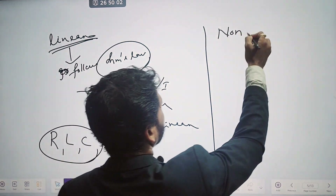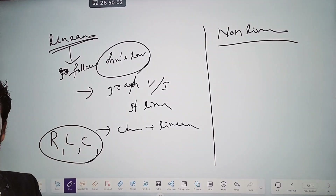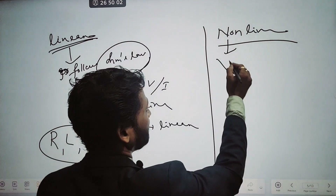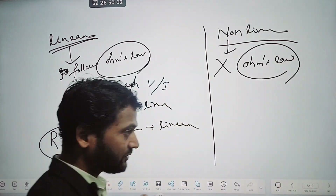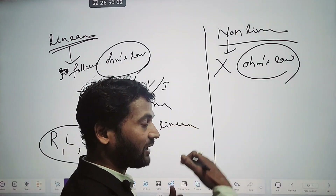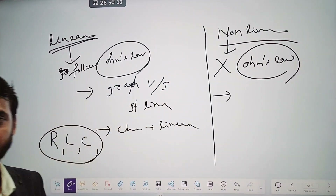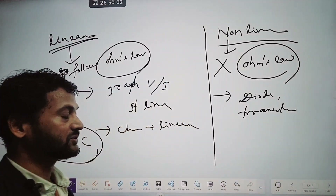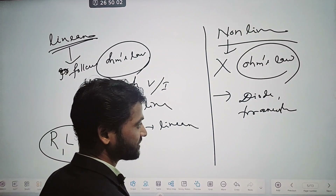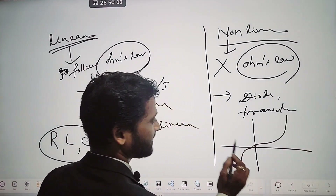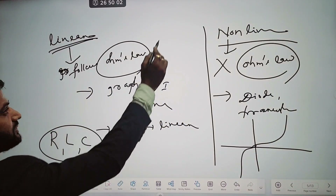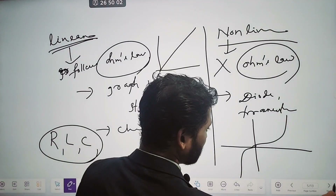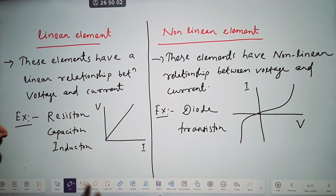In case of a non-linear element, the graph between voltage and current will be non-linear in nature, or you can say it does not obey Ohm's law. You might have studied in class 12 the characteristics of a diode — diode is a non-linear element. Transistors and all kinds of electronic or semiconducting switches are under non-linear categories. In a diode's graph, one side is forward bias and the other is reverse bias — that is the basic difference between linear and non-linear elements.